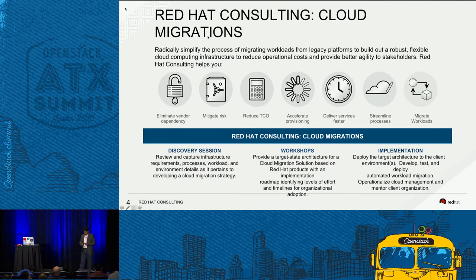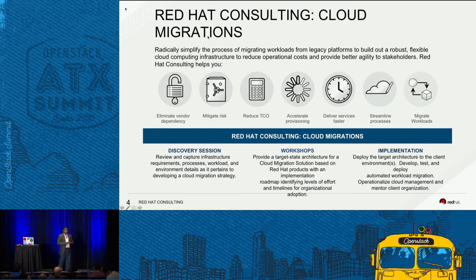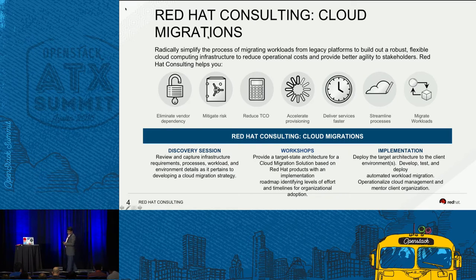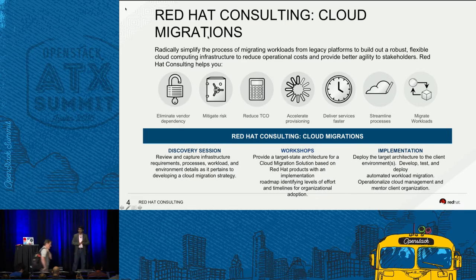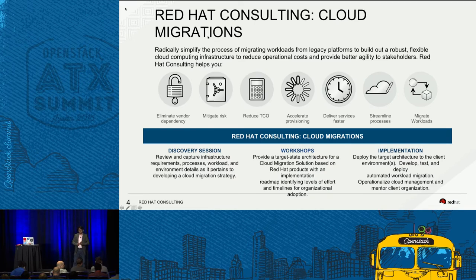What does Red Hat's cloud migration solution look like? The goal is to work with customers to eliminate vendor dependencies and mitigate risk. A primary question is security and compliance — when moving to the cloud, how do you ensure you're compliant with existing requirements and that it's secure? We help customers reduce TCO by working with open source solutions. The goal is to accelerate provisioning. You probably have customers who still take 40 to 50 days to provision a single VM or server, so we accelerate that to look much more agile in standing up new infrastructures.